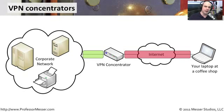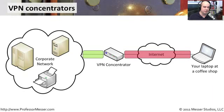By using some software in your operating system or on your machine, you're able to create an encrypted tunnel through the internet to the VPN concentrator. And it may not just be one person — it may be many, many different people, in some cases hundreds or thousands of people, connecting through these encrypted tunnels back to the VPN concentrator, creating that virtual private network.